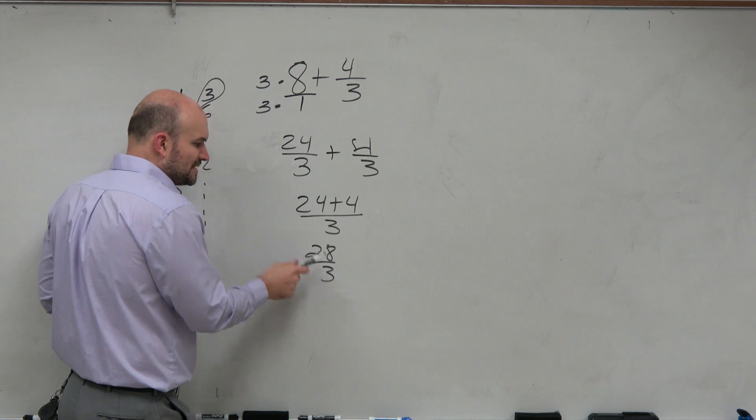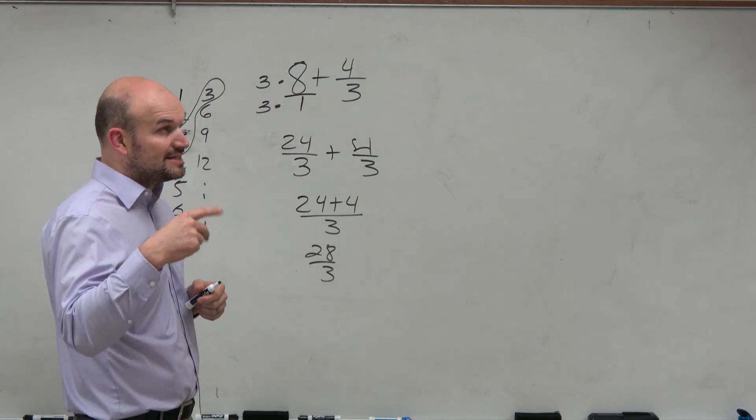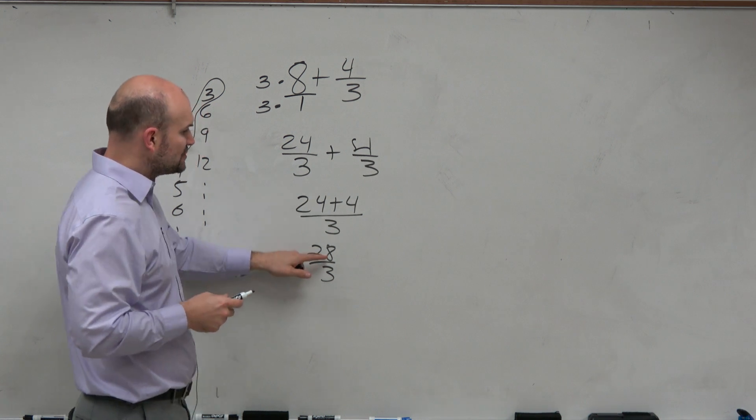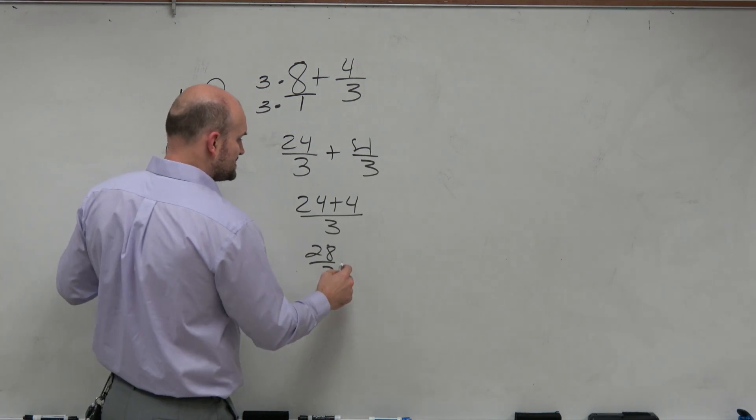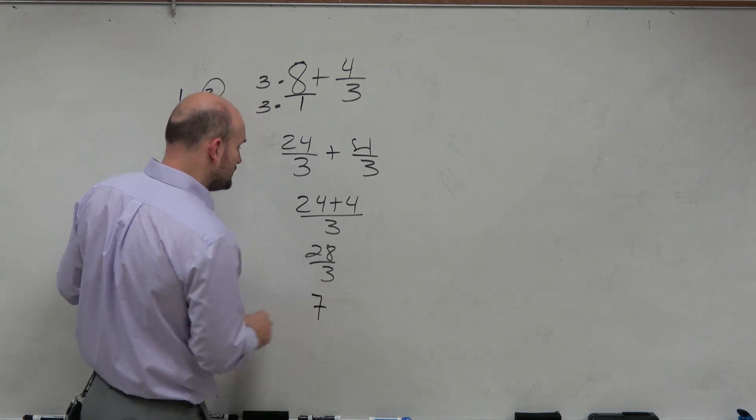So to do that, you're going to say, how many times is 3 evenly divided into 28? Well, 3 times 9 is 27. And 28 minus 27 is 1. So that means, as a fraction, we could write this as, it goes in there 7 whole times, right?